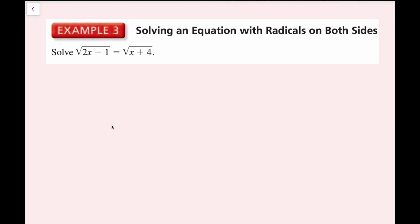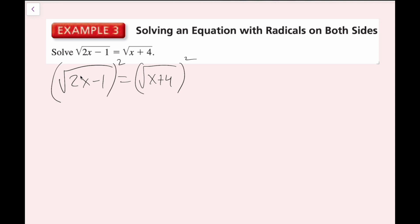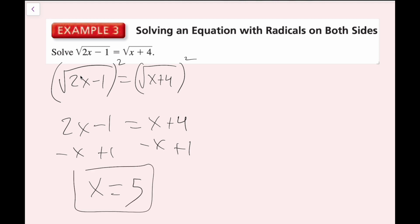For example 3, I solve the equation: the square root of 2x minus 1 equals the square root of x plus 4. I square both sides to cancel both radicals, giving 2x minus 1 equals x plus 4. Then I subtract x on both sides and add 1 on both sides to get x equals 5.